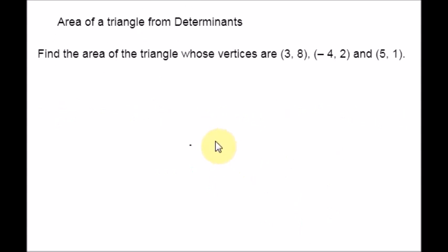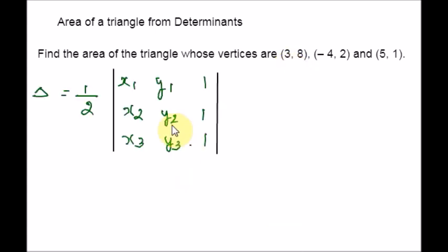Let us take an example. Find the area of a triangle whose vertices are given — I am taking specific coordinate numbers. Let me write the area of the triangle in determinant form first. So this is the determinant. Let me name these numbers: x1, y1, x2, y2, x3, y3. After naming all these points, we can plug them into the determinant formula.